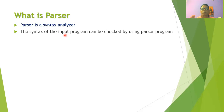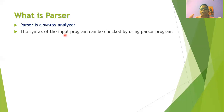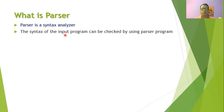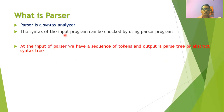While writing the program it is necessary to obey the rules so that the program can be correctly compiled. The grammatical rules can be checked by using software called the parser or syntax analyzer. The syntax or grammar of the input program can be checked by using the parser program.